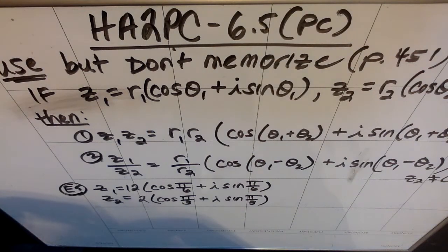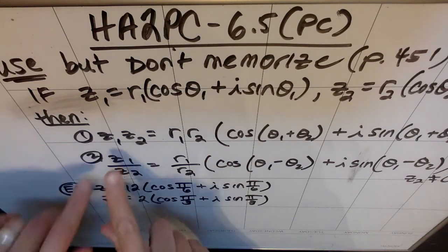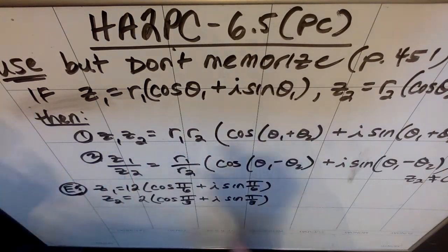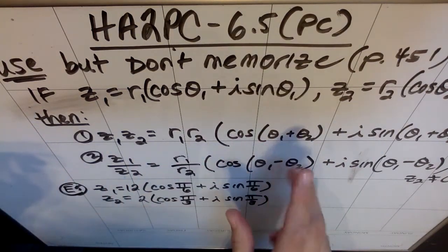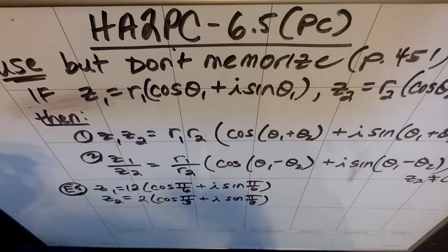In my brain, this always kind of makes sense because multiplication and addition sort of go together because they're the commutative operations, whereas division and subtraction kind of go together because they're not commutative. That's how my brain works. So we have a z1 and a z2. We multiply the r's. We sum the thetas inside the cosine and the sine.